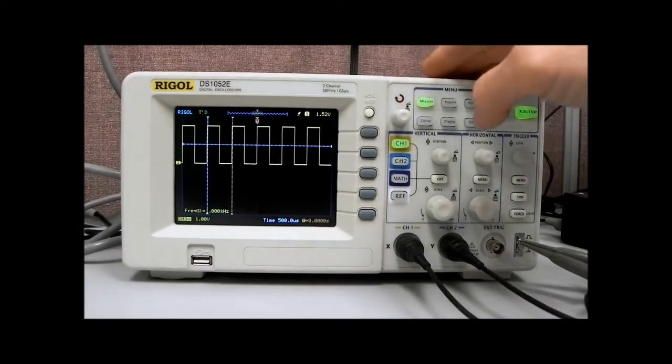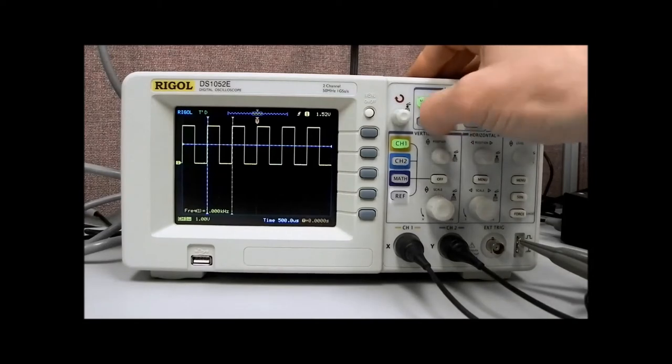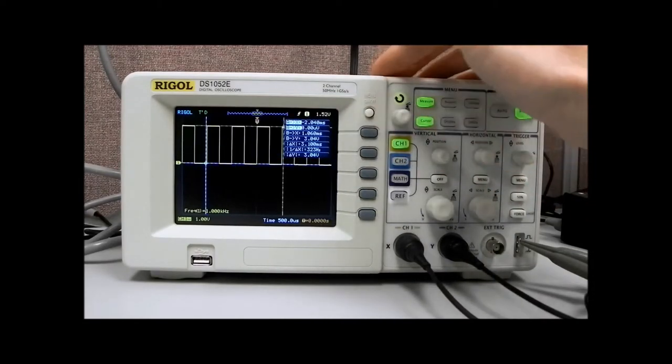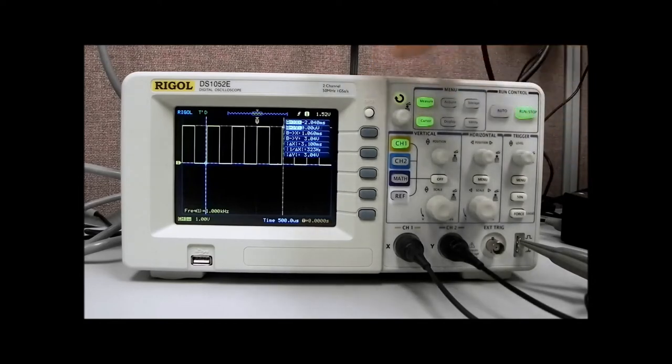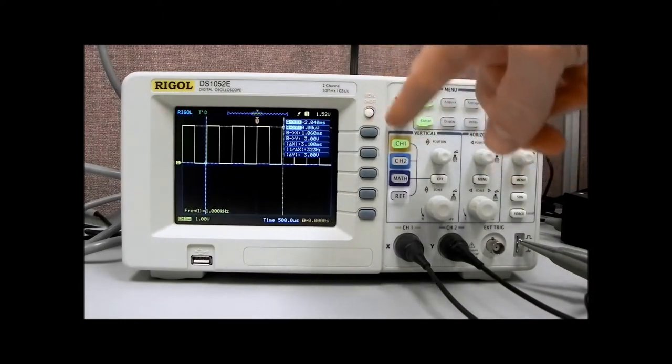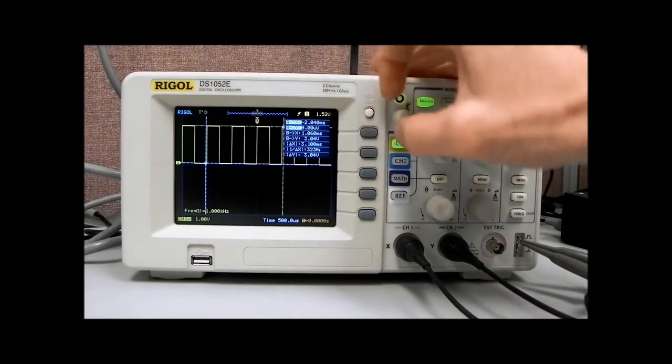Now let's take a look at some of the other cursor measurement modes. Let's go to cursor, and then out of auto, let's go to track. And what tracking is going to do, as you can see, it's actually moving along with the signal. I've collapsed the menu for that particular function.